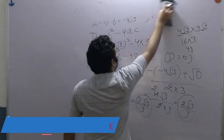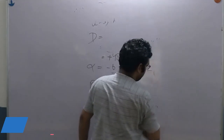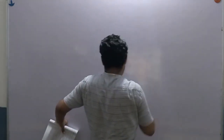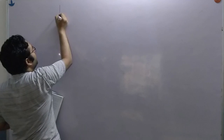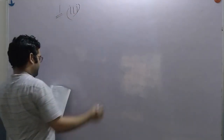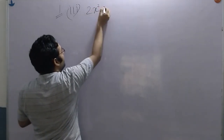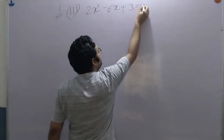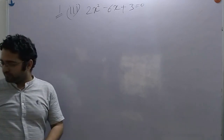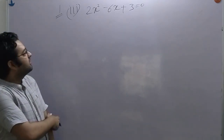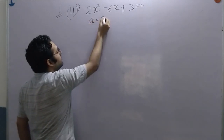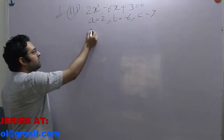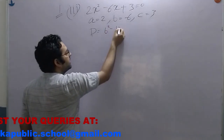Question 1, Part 3: 2x² minus 6x plus 3 equals 0. Here a = 2, b = -6, c = 3. So D = b² - 4ac.